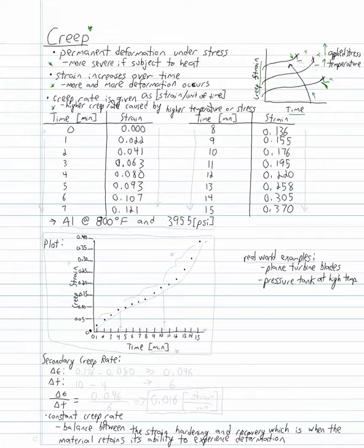We want to make a plot of time versus strain and find the secondary creep rate for an example of aluminum at 800 degrees Fahrenheit and 3955 psi. First, we're given the time versus strain table. As you can see, it ranges from 0 to 15 right over here, as well as the strain for the corresponding times which is right over here. I've plotted this for the creep strain versus time, which is in minutes over here.